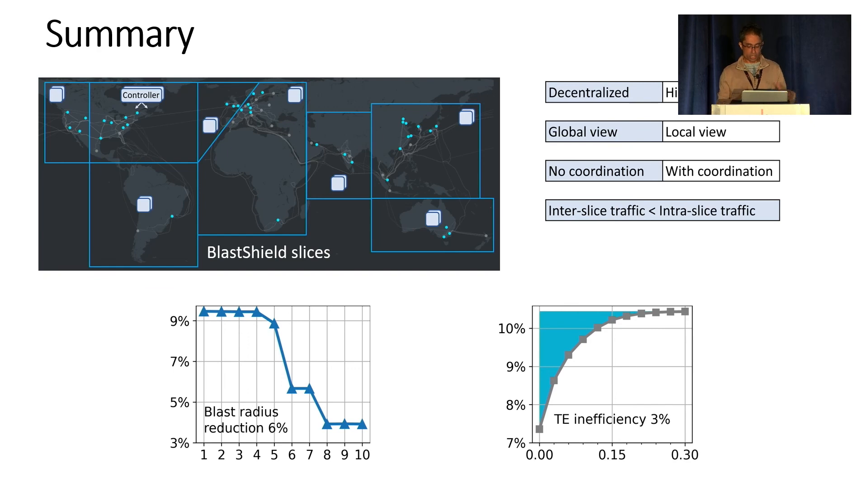So in summary, our network is divided into slices. We use a decentralized approach. It has benefits of decreasing the blast radius. And by keeping that inter-slice traffic low, we're able to deal with a small amount of inefficiency that comes. So that's it.